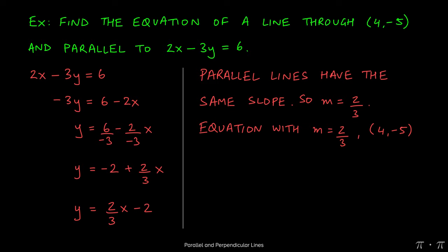If we have a point and we have a slope, all we need to do is plug the numbers in where they belong and get our answer. So y minus y1, which is negative 5, equals 2 thirds times the quantity x minus x1, which is 4.